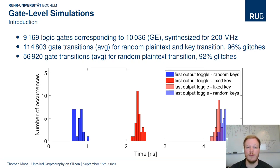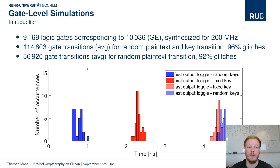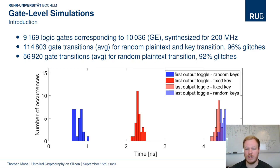Before moving to the experimental analysis, here are some implementation details and post-layout gate-level simulation results of the PRINCE core. The core itself is about 9,000 logic gates, occupying about 10,000 gate equivalents on the chip, synthesized for 200 MHz operation. When both key and plaintext make a random transition, the 9,000 gates are subject to about 115,000 transitions in less than 5 nanoseconds — each gate toggles on average about 12 times before the final stable state is reached. The majority of these toggles are glitches, unnecessary for the correct output computation.